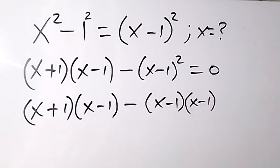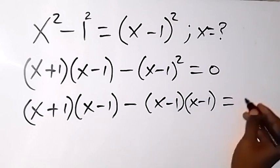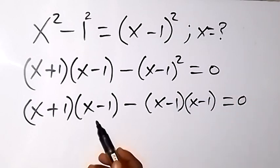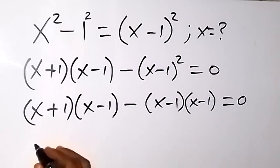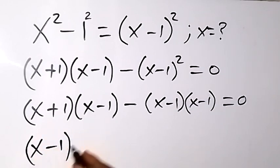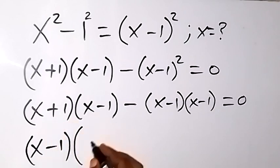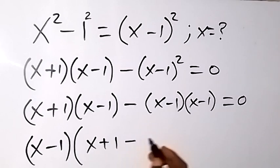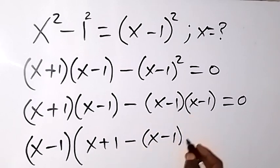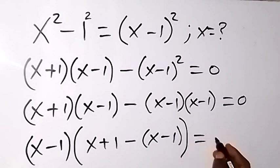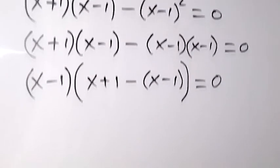So we have written this one to multiply itself, then equals to zero. From here we have (x-1) common, let's take it out. We have (x-1) common, then what is left here is (x+1), then minus what is left here is (x-1). Let's close the bracket, then it equals zero.